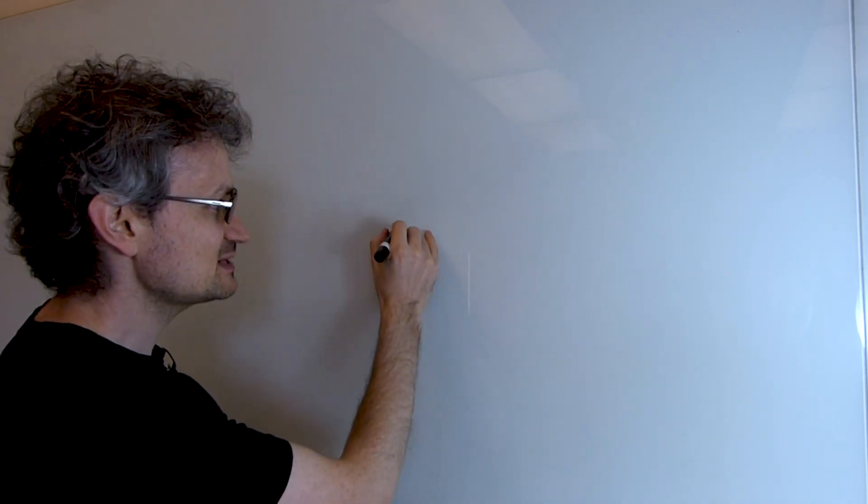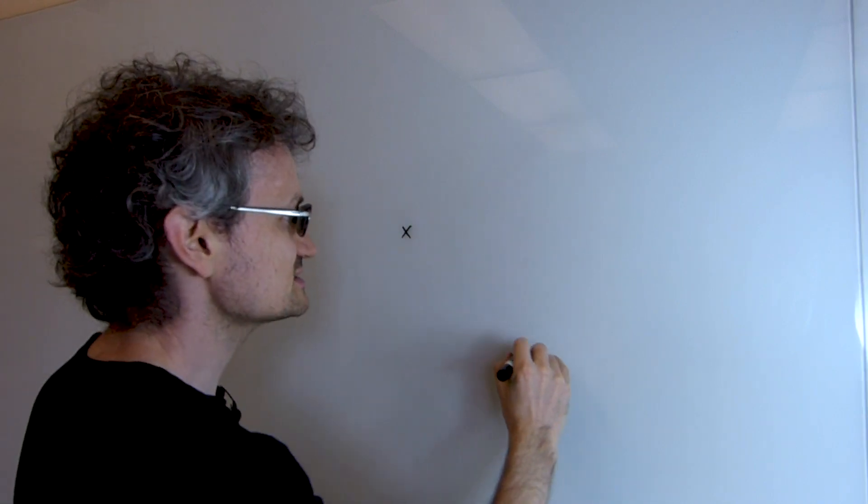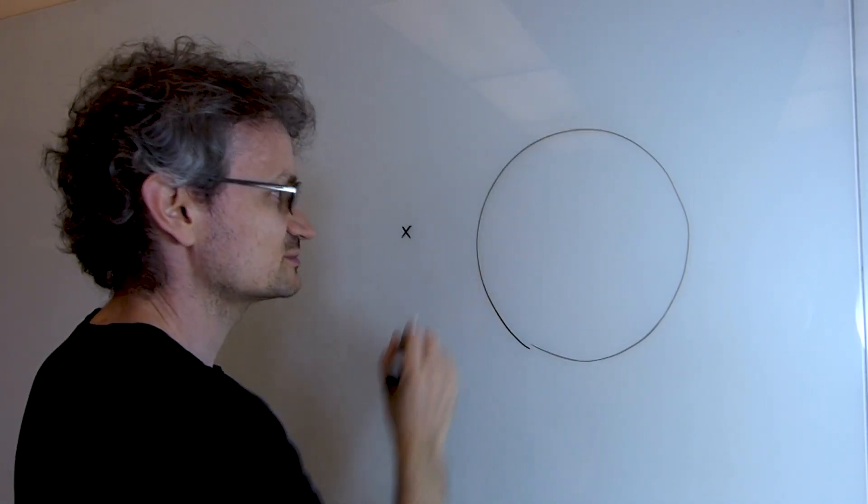We made this simulation using a technique called ray marching. The first idea here is that the objects in the space are described by something called a signed distance function. For each point in space, the signed distance function tells us how far away from the objects we are.